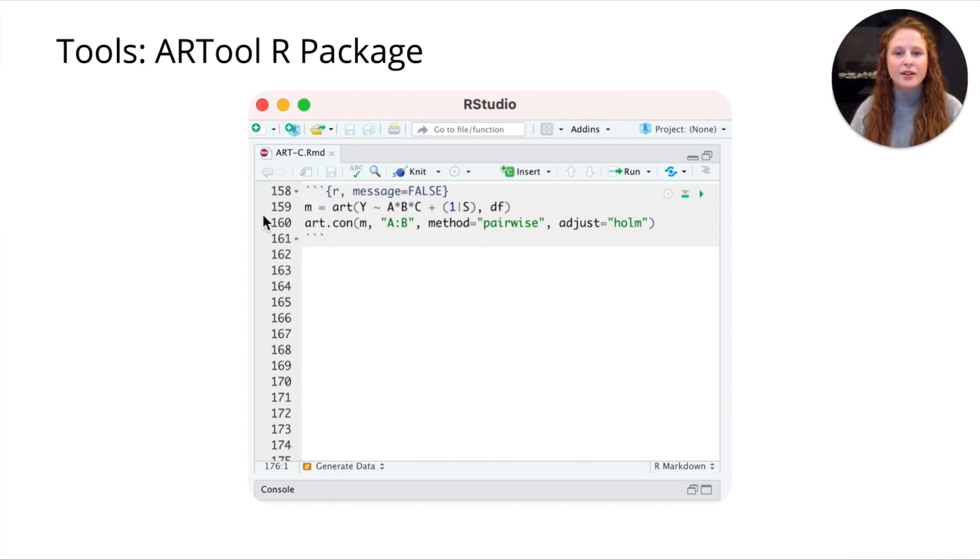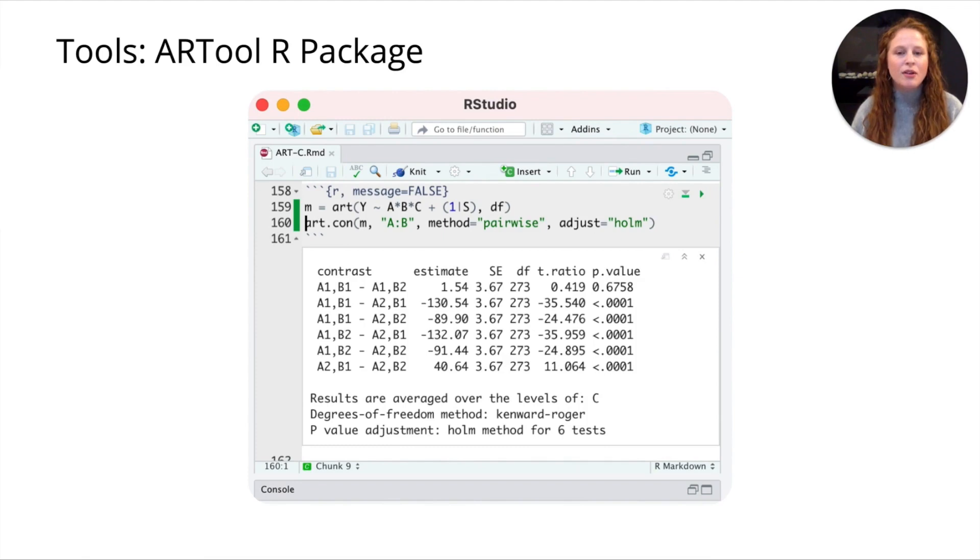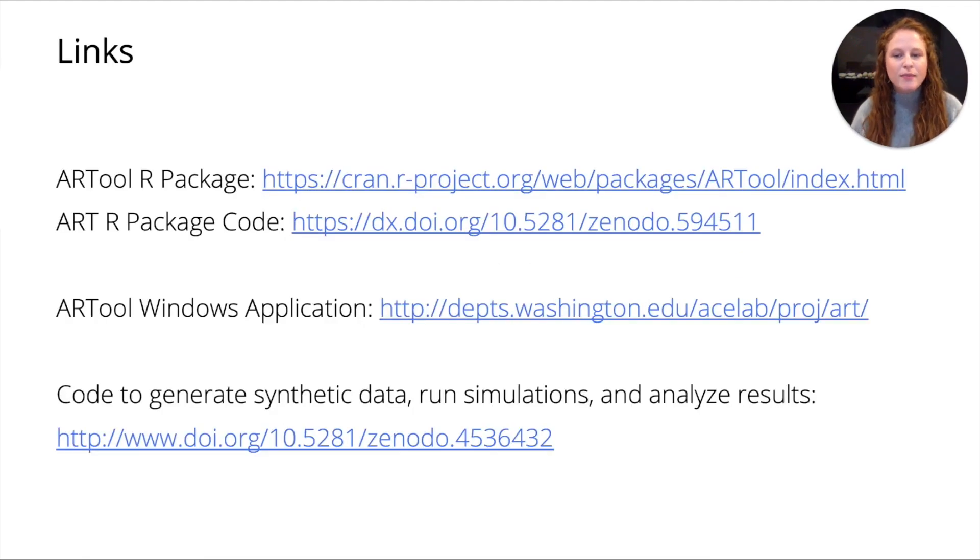We've also extended the ARTool R package. As before, users create an ART model and run an ANOVA on that ART model. Now we've added this ART.con function so that users can conduct ART contrasts with one extra line of code. All of this is available online, the ARTool R package, the code for the R package. At that third link, the ARTool Windows application and the code for it are also available. We've put all the code that we use to generate synthetic data, run simulations, and analyze results online. All of these links are also in our paper. At that bottom link, we've also included a nice R markdown document that explains everything we did in the paper, but in a more approachable way that might be useful for some people who are less familiar with statistics.